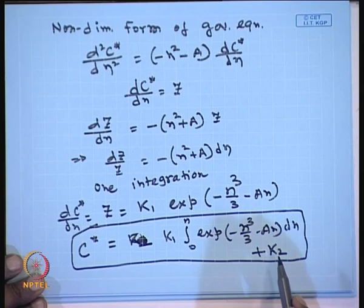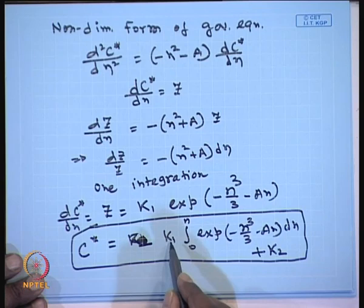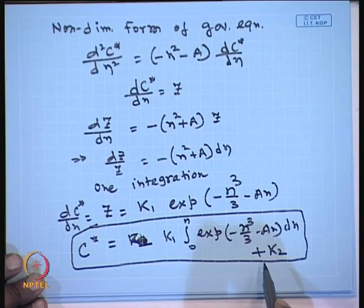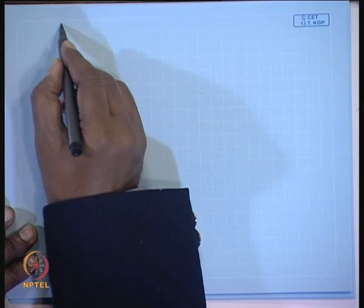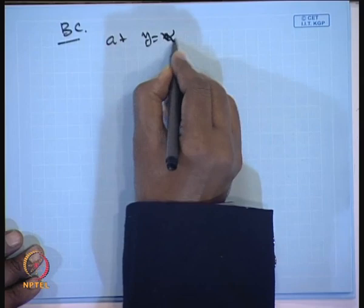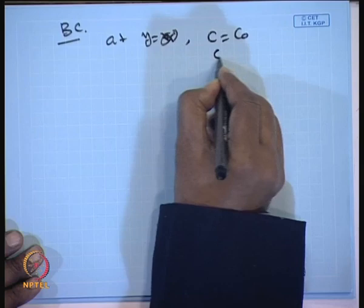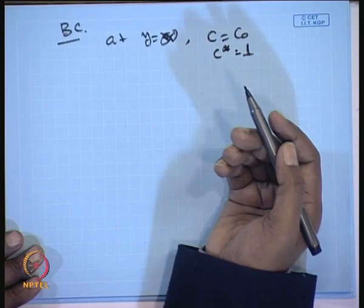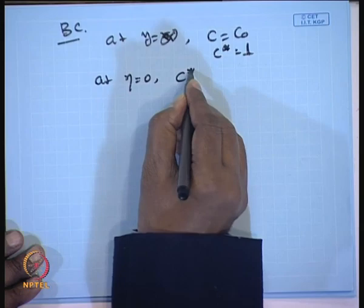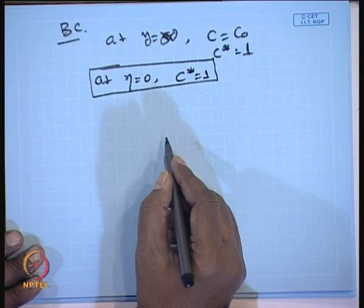To evaluate the two constants k₁ and k₂, we require two boundary conditions in y, expressed in terms of the combined variable η. The boundary condition at y = ∞: c = c₀, so c* = 1. Since η = y/x^(1/3), y = ∞ means η = ∞. Therefore the first boundary condition is: at η = ∞, c* = 1.